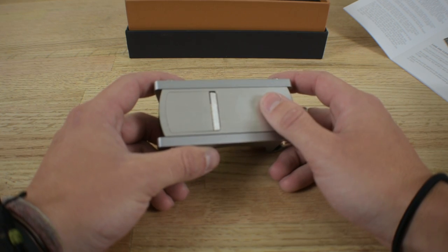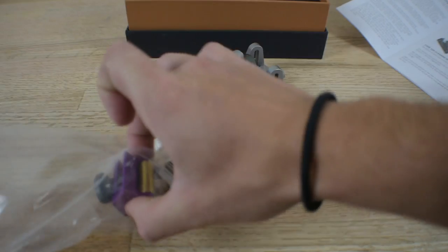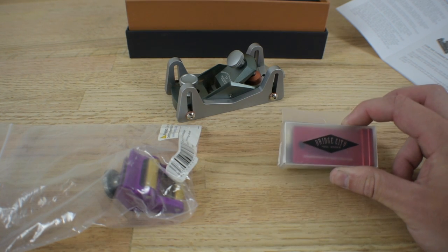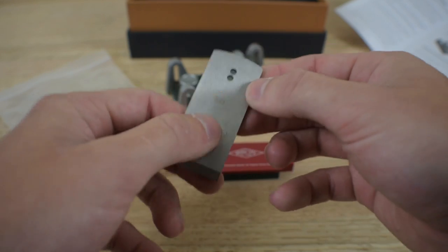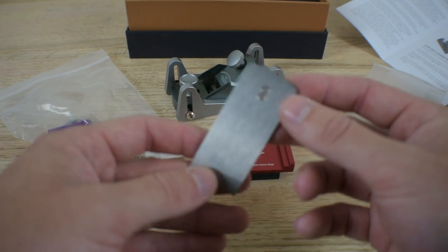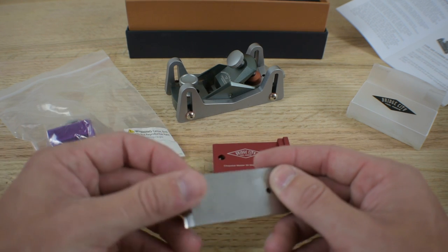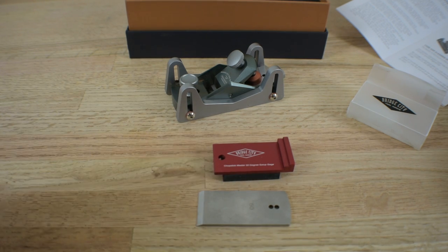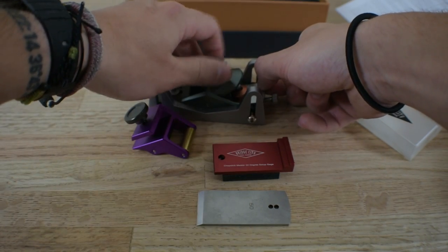Here's the plane and here are the two things that Bridge City Tools website will recommend when you purchase it. This is the blade kit. Here is the 50-degree blade with a nice little etching on it. As you can see, it is not a mirror finish either but it is very flat and it is kind of sharp out of the box, like it's usable but not great.